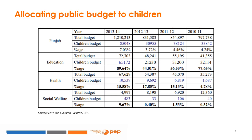This child budget from Pakistan provides an example of what a child budget might look like after all steps are completed. In Punjab, children receive most of the focus in the education sector, although with large differences across the years. Comparatively, budget allocation to schemes benefiting children in health and social welfare are low and worryingly going down. The higher allocation for children in education in 2010-11 was attributed to special programs initiated in the province of Punjab in 2010, with no such programs put into place in other sectors.